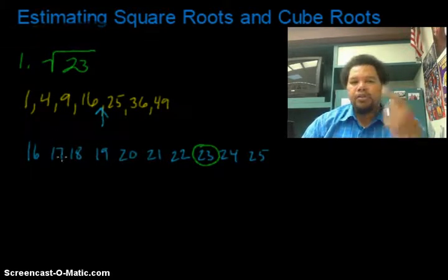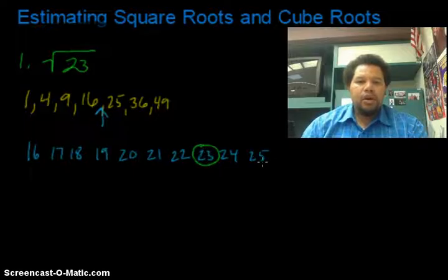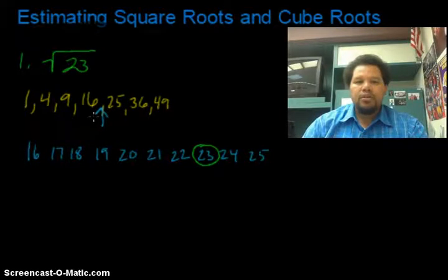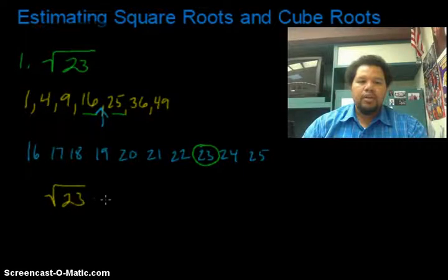So I also mentally take note that 23 is closer to 25 than it is to 16. So therefore, I'm going to say that the square root of 23 is going to be closer to the square root of 25 than it is to the square root of 16. Since 16 and 25 are the perfect squares that it's in between, I'm going to finally say that the square root of 23 is about—we use the little squiggly, not the equal sign, but this is approximation—